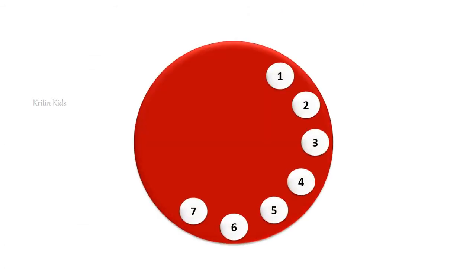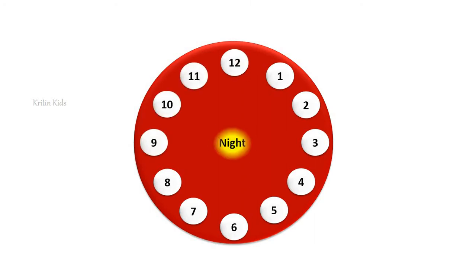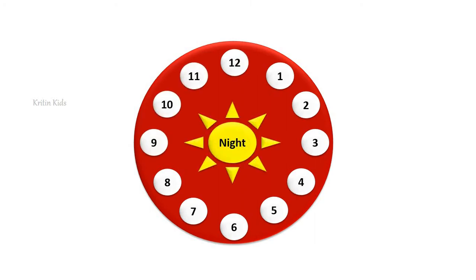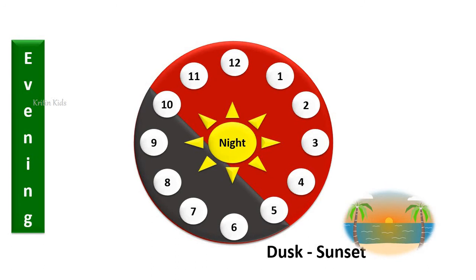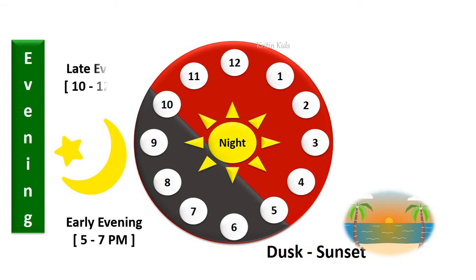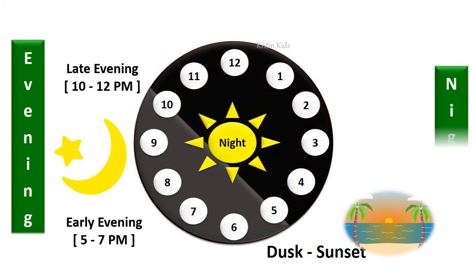Now we will discuss the same for the night cycle. Here is our watch. Here we are considering that sunset begins at 5 o'clock, which is called as dusk. From 5 o'clock to 7 o'clock, it is called as early evening. And from 10 o'clock to 12 o'clock, it is called as late evening. And from 10 o'clock to sunrise, it is called as night.